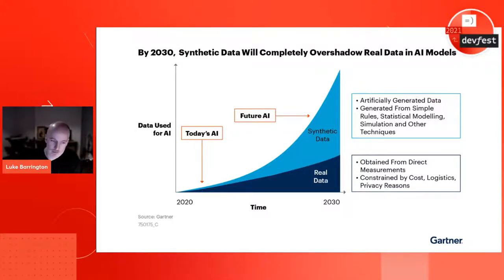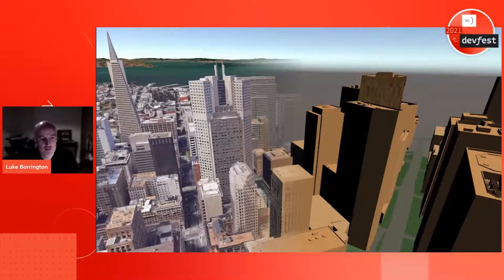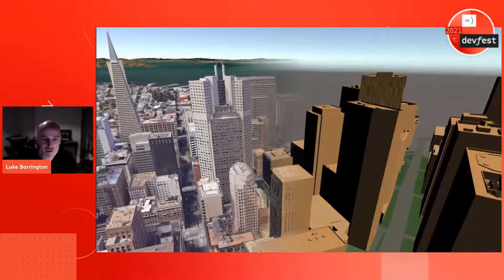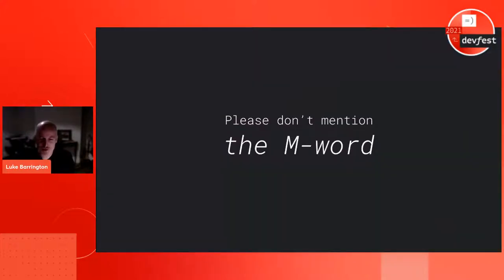I want to talk about how we can take real-world data and, with AI models and other clever algorithms, construct a synthetic version of reality. I also want to convince you why you might want to do that, and some of the use cases and applications that I think will come out of it. Hopefully I'll do all this without mentioning the M-word: you don't have to buy into all of this metaverse mania to believe that reconstructing the real world as a digital twin might be a good idea.